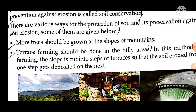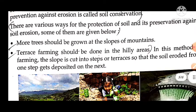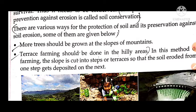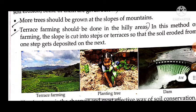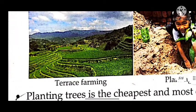The next step is terrace farming, which should be done in a hill area. If our area is a hill area, we should do terrace farming. In terrace farming, we cut the slope into steps, like a staircase, so that the soil is conserved.